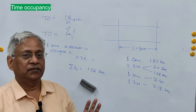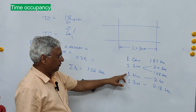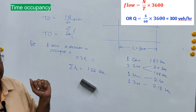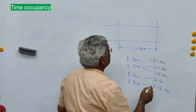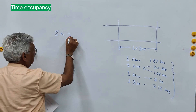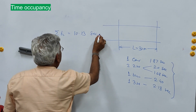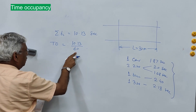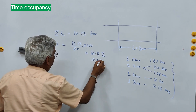What is the density on the road? There are five vehicles counted in 60 seconds, so flow = 5/60 × 3600 = 300 vehicles per hour. The total time is the sum of all t_i values: 1.87 + 2.00 + 1.68 + 2.40 + 2.18 = 10.13 seconds. Therefore time occupancy = 10.13 / 60 × 100 = 16.9%, or 0.169.